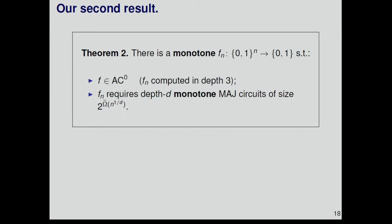Our second result is answering that question. Indeed, there is a monotone function on n bits, such that this function is in AC0, and in fact, it is computed by only three layers. And this monotone function requires depth D monotone majority circuits of size, roughly 2 to the n to the 1 over D. Compared to the Immerman-Tardos-Gurevich theorem, this result gives an exponential separation instead of quasi-polynomial, and our hardness is against majority gates instead of and-or gates. It's stronger in these two senses.